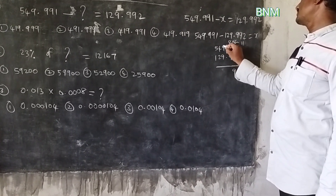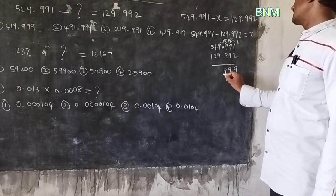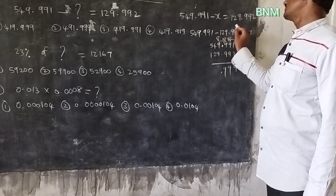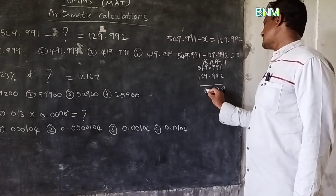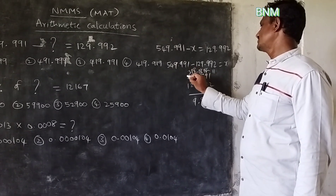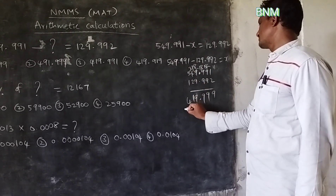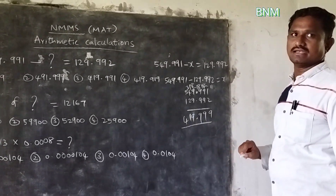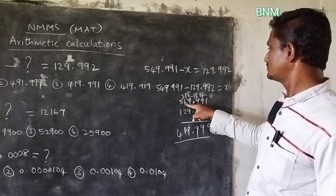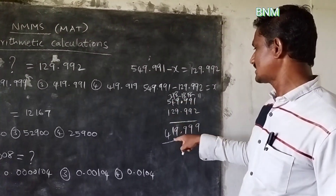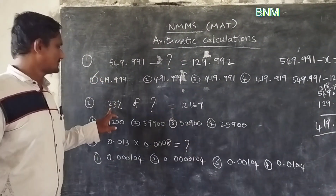849.992 minus. 9 subtract 1 gives 9 — working through the digit-by-digit subtraction: 18 minus 9, carry operations, 3 minus 2 gives 1, 5 minus 0 gives 4. The result is 419.999. Subtraction complete; first option is the right answer.